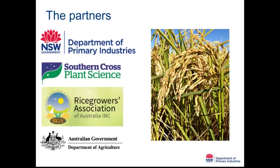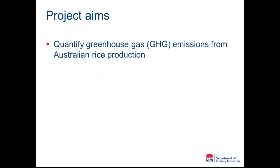This was a collaborative project between the NSW DPI, Southern Cross University and Rice Growers Association, co-funded by the Australian Government Department of Agriculture. It is an action-on-the-ground project from the Carbon Farming Futures program, which means the work is carried out on real farmers' properties. The project aims were to quantify greenhouse gas emissions from Australian rice production, something that up until now has not been done properly.